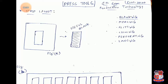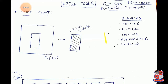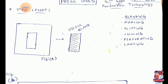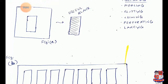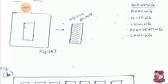I have listed some of the processes that we can perform on a press machine: blanking, piercing, slitting, coining, perforating, lancing, etc. Among all these processes, we will be focusing on the blanking process. Consider figure A, which shows a rectangular block to be blanked out of a sheet. From a sheet piece, we perform a blanking operation and take a rectangular blank. As you can see, the remaining material is wasted.